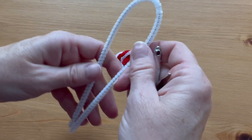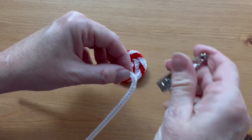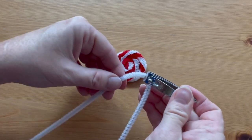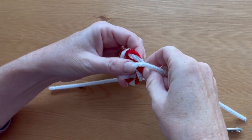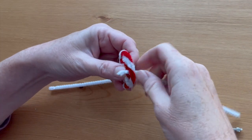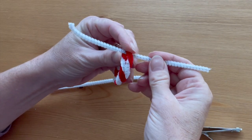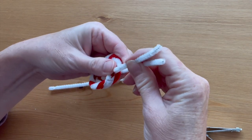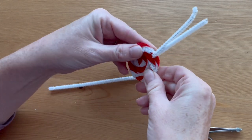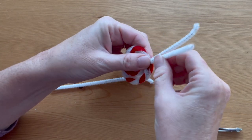Cut the white pipe cleaner in half with the fingernail clippers. Send one of the halves through the outside coil of the mint and fold it in half. Twist it around once or twice to keep it in place.